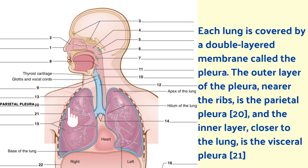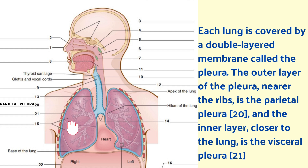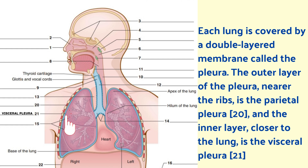Each lung is covered by a double-layered membrane called the pleura. The outer layer near the ribs is the parietal pleura, and the inner layer closer to the lung is the visceral pleura.